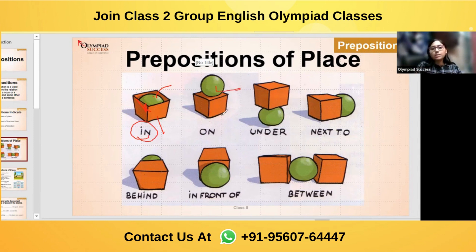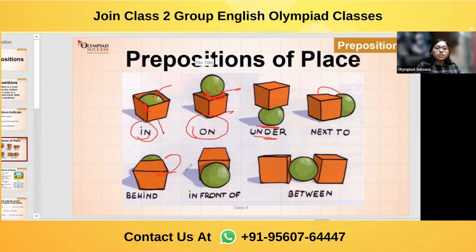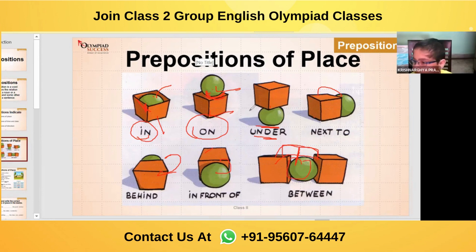This is a ball, this is a box. The ball is on the box — so 'on' is preposition of place. This is under, this is next to, this is behind, this is in front of, and this ball is in between these two boxes. Can you give me one sentence using any of these prepositions? Write in the chat box.